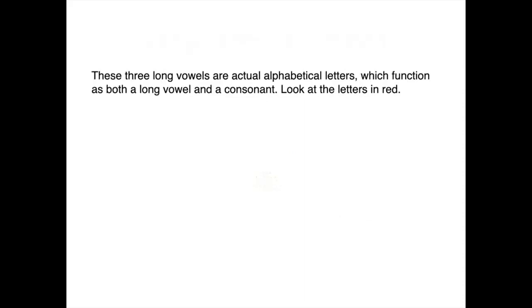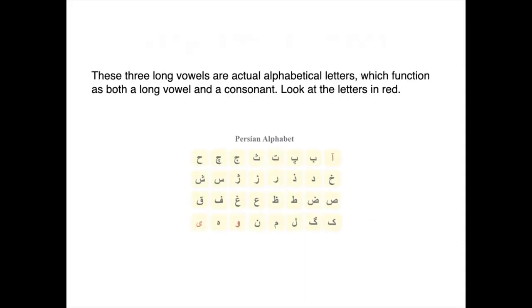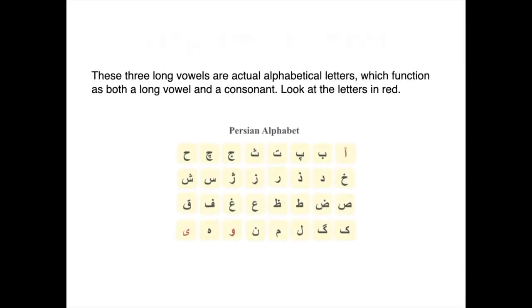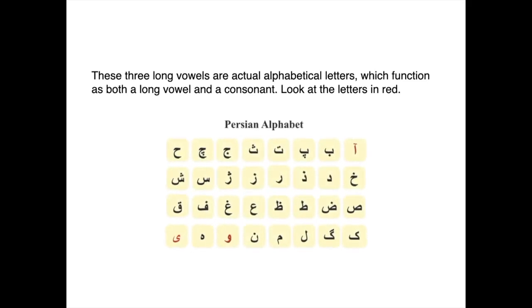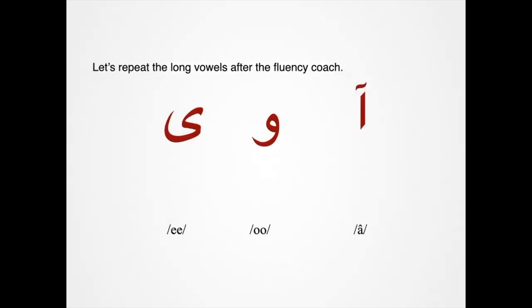These three long vowels are actual alphabetical letters, which function as both a long vowel and a consonant. Look at the letters in red. Let's repeat the long vowels after the fluency code.